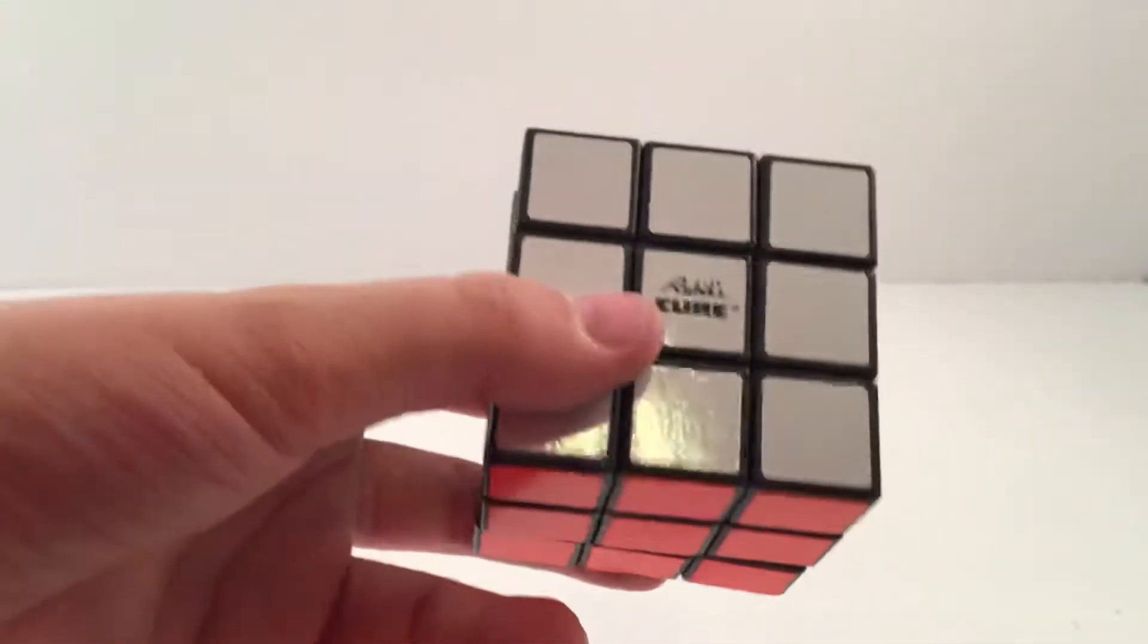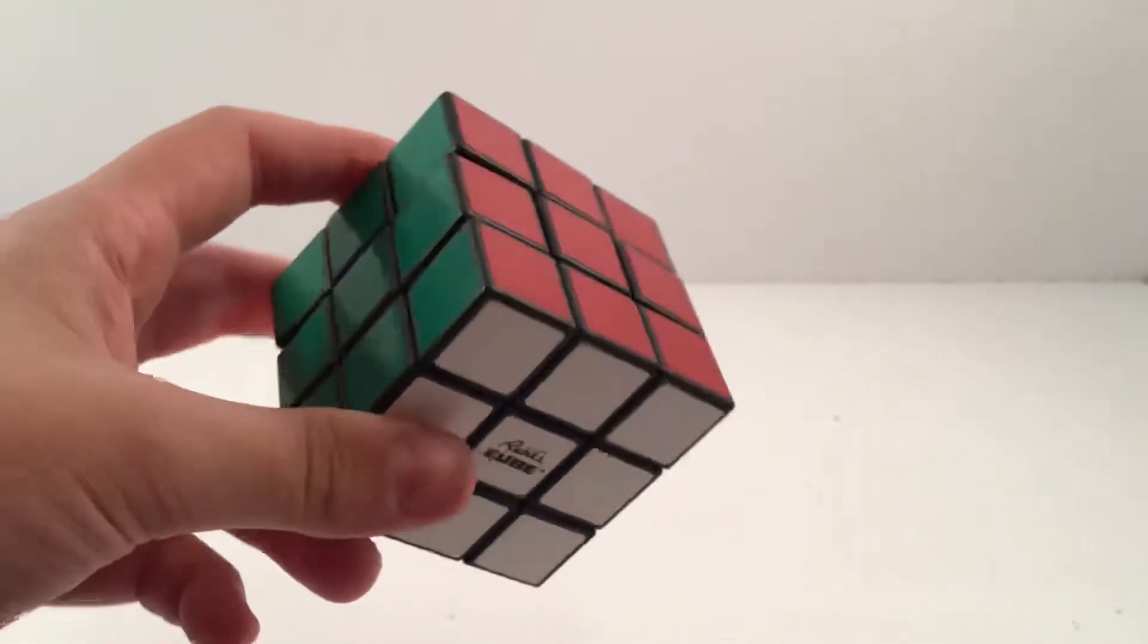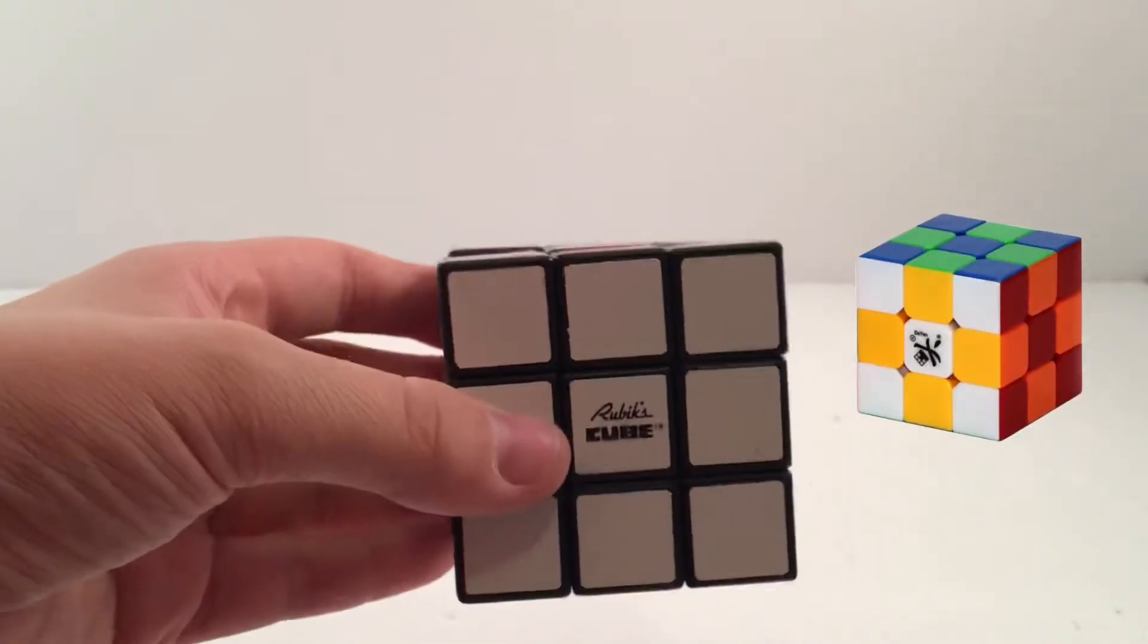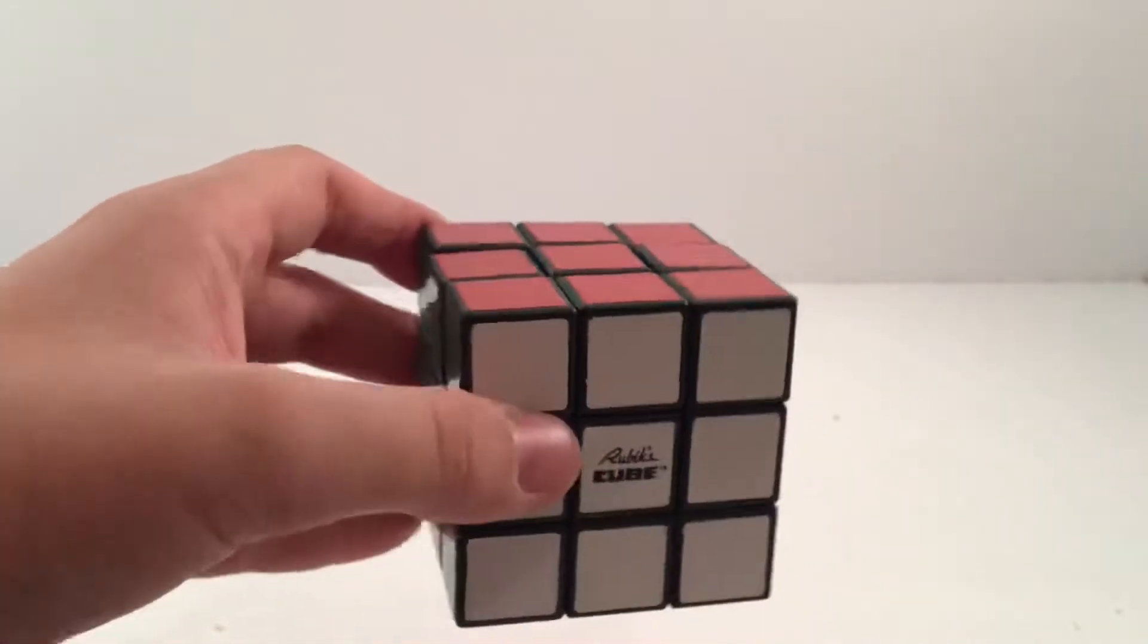Basically what happened was that the core of this cube was broken, so what I had to do is take all the pieces including the center parts and screw them onto a Dayan Zanchi core along with the Dayan Zanchi screws and springs.